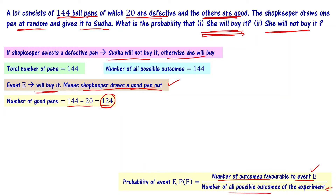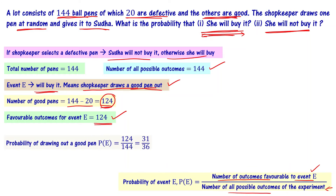The number of favorable outcomes for this event is 124, because there are 124 good pens. All possible outcomes are 144. So the probability of drawing out a good pen is 124 by 144.